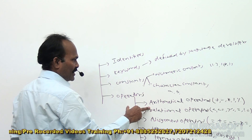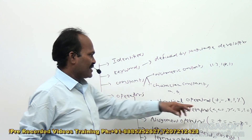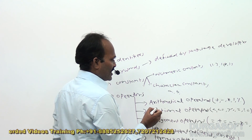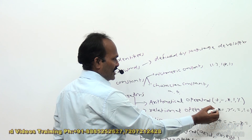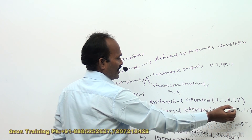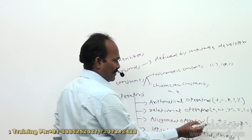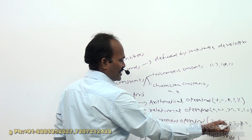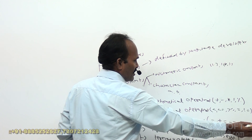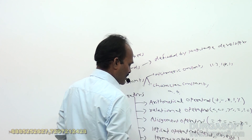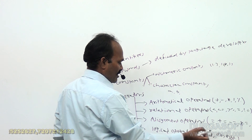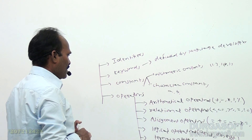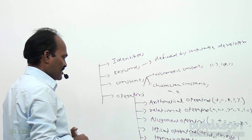To summarize: arithmetic operators are plus, minus, star, division, and modulo. Relational operators are less than, less than or equal to, greater than, greater than or equal to, equal to, and not equal to. Assignment operators include normal assignment, addition, subtraction, multiplication, division, and modulo assignments. Logical operators are AND, OR, and NOT. The ternary operator was already explained. These are all the operators available in the C++ language.